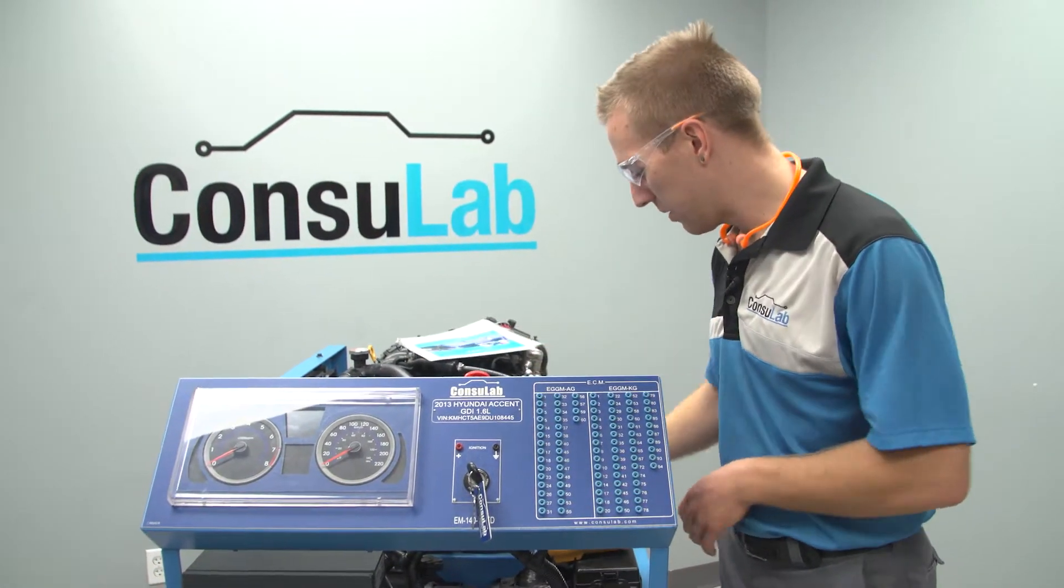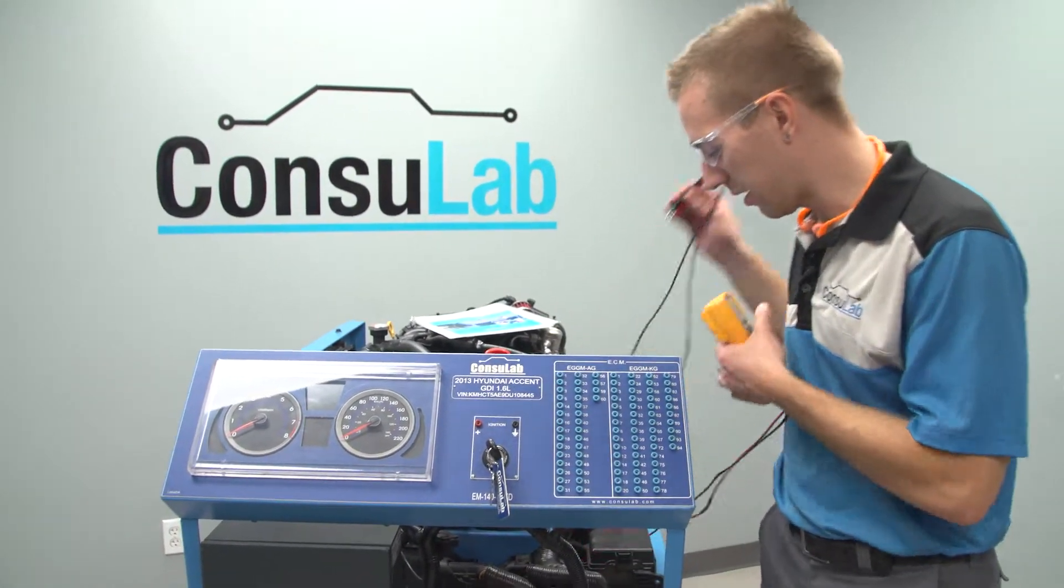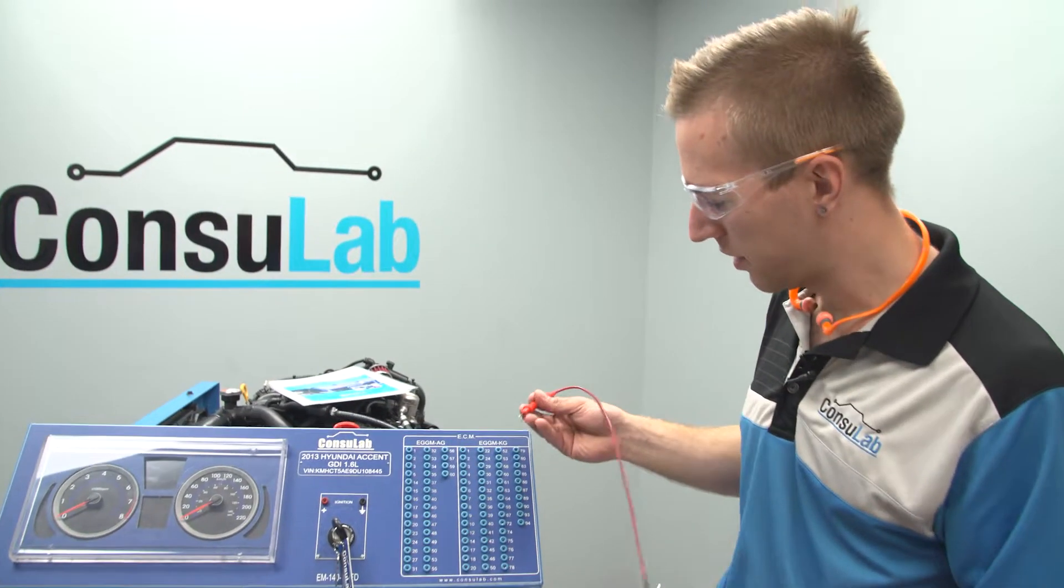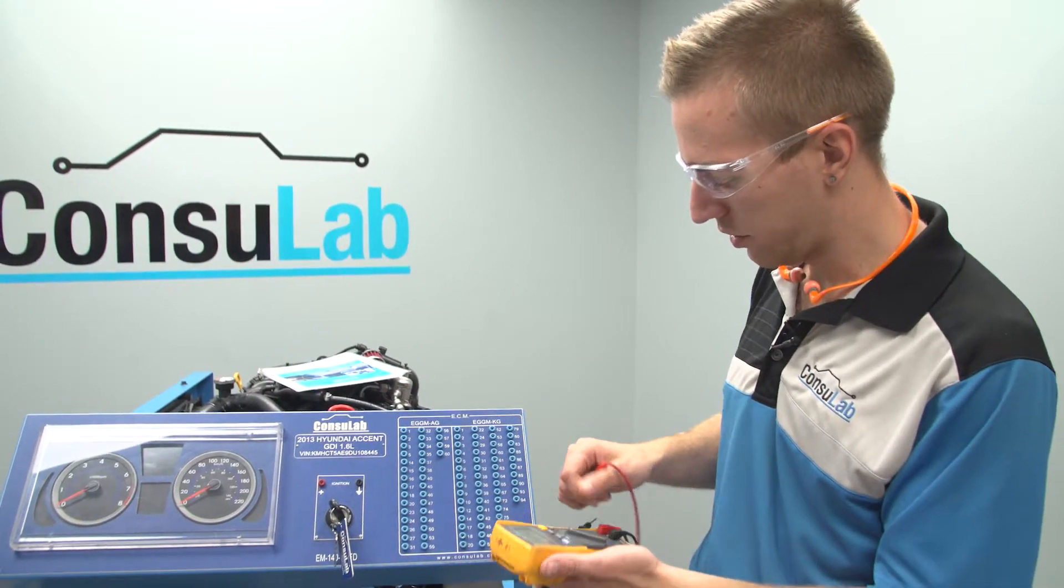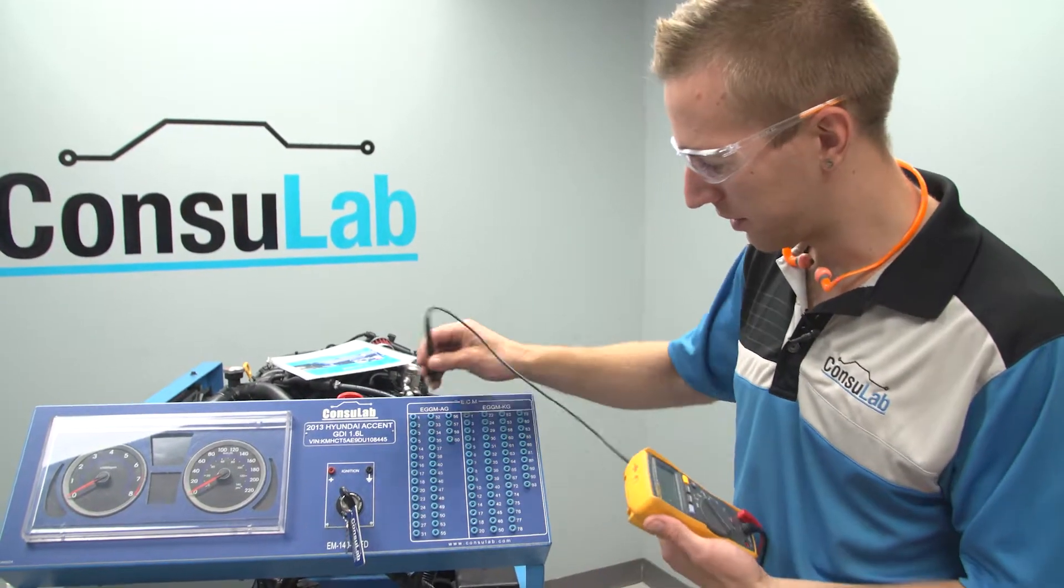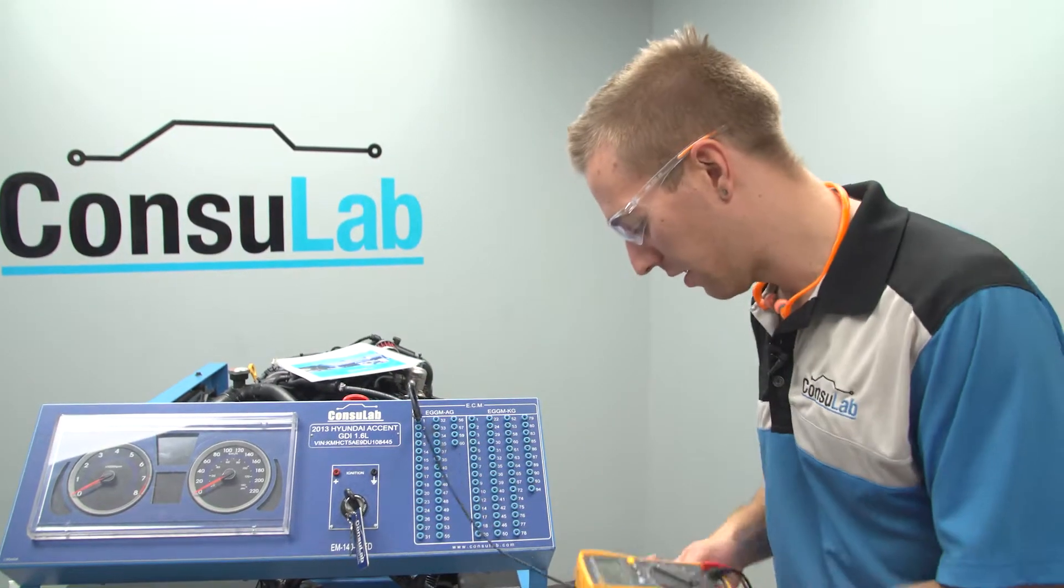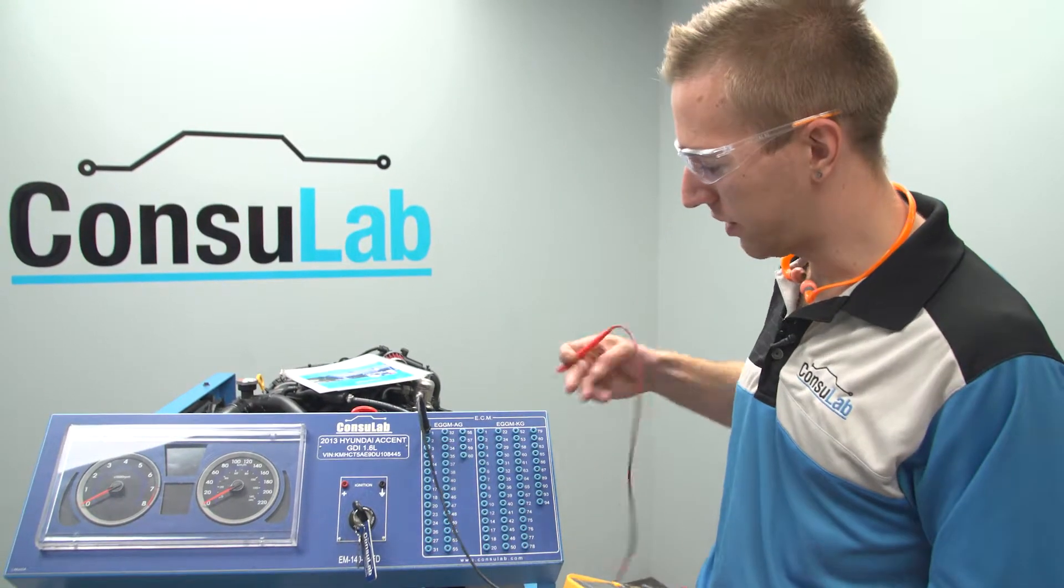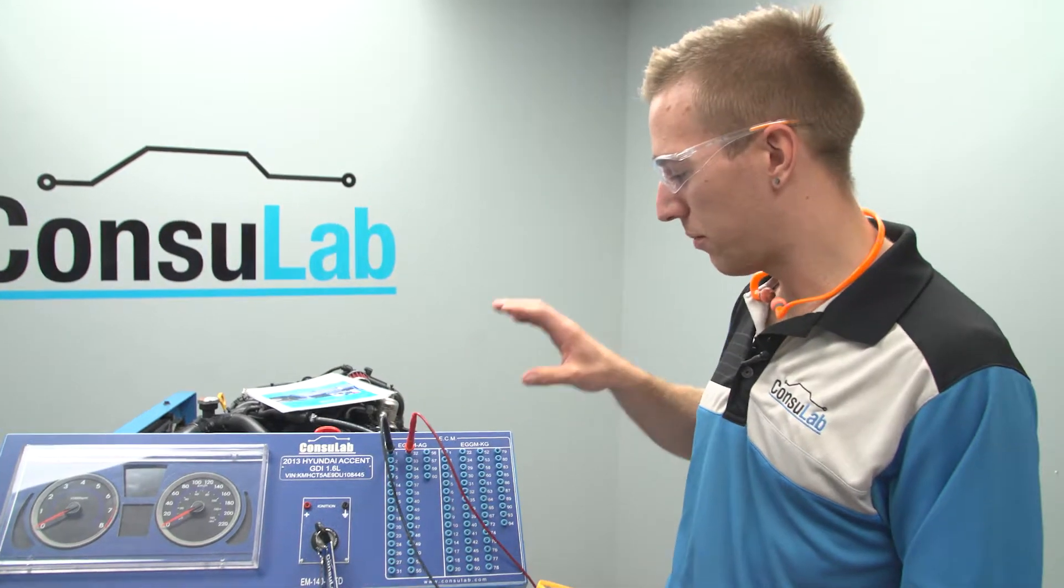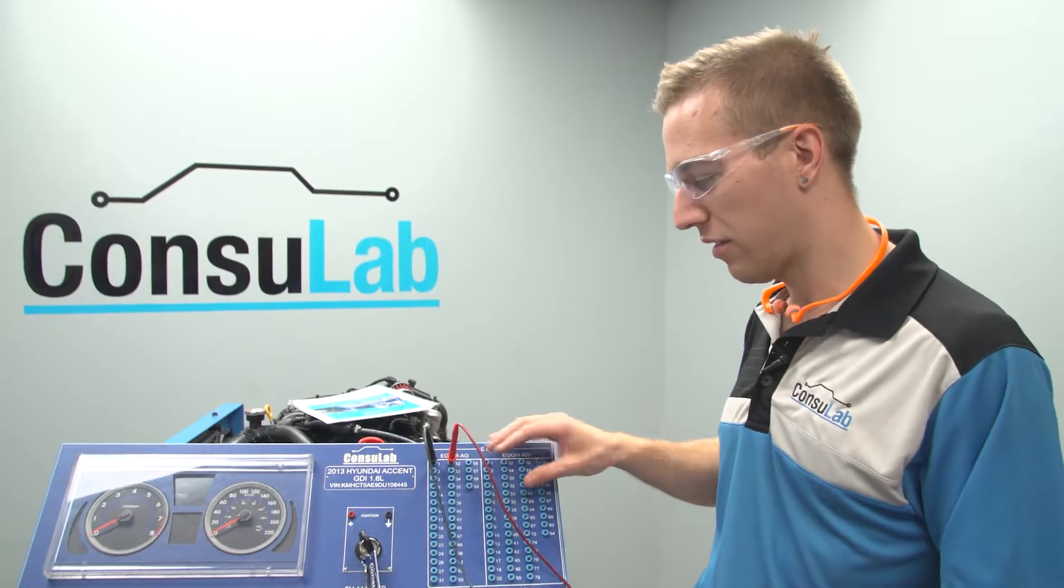The other advantage is that because we're using 2mm sockets, your multimeter leads fit directly in there once you turn the multimeter on. We have seen schools that have had breakout boxes on engine benches for 10 years, 15 years, and the harness is still intact,